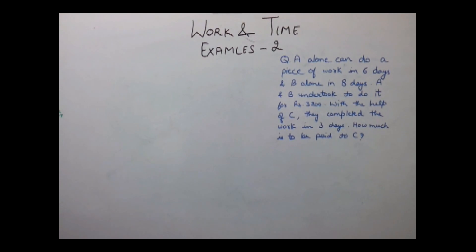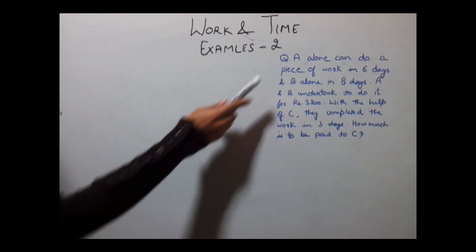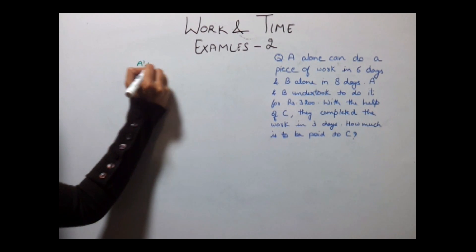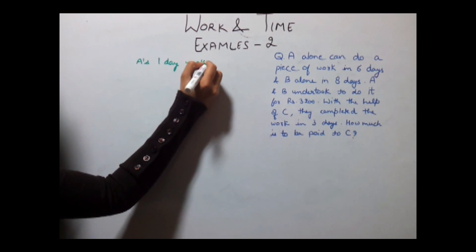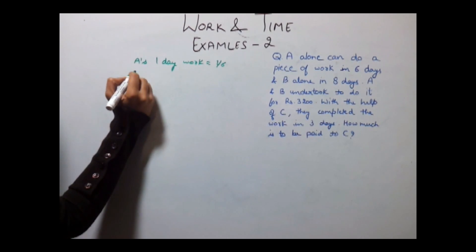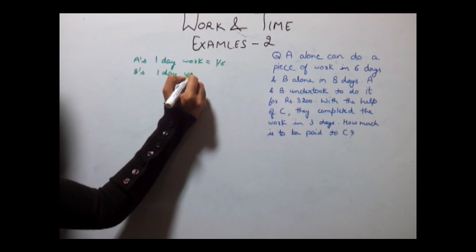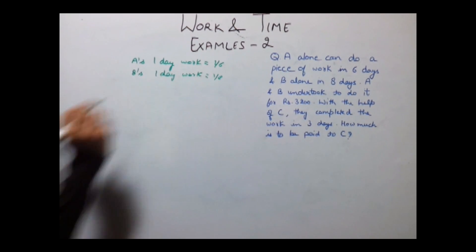In the questions of work and time, as told you earlier, first you need to calculate their one day work. So as A can complete the total work in 6 days, A's one day work will be equal to 1/6. Similarly B's one day work is equal to 1/8.